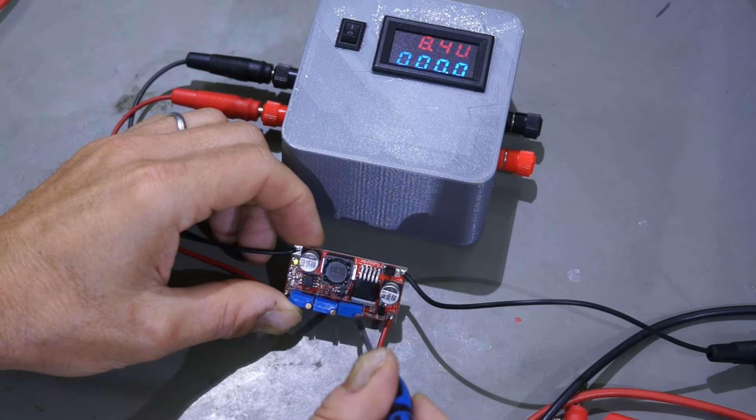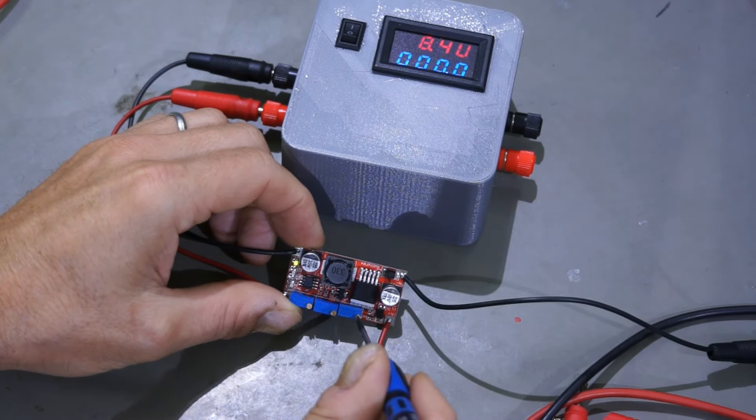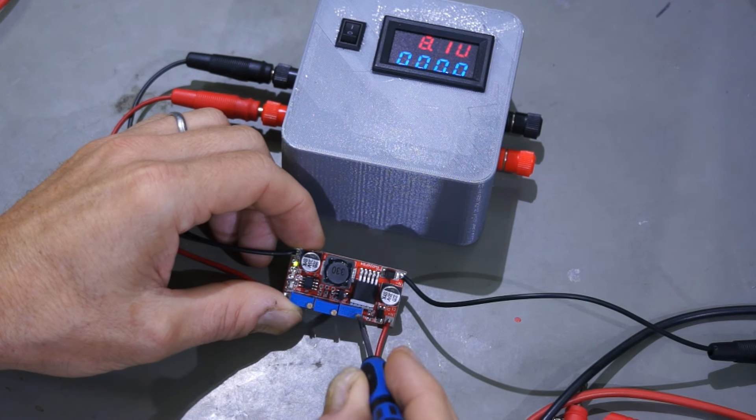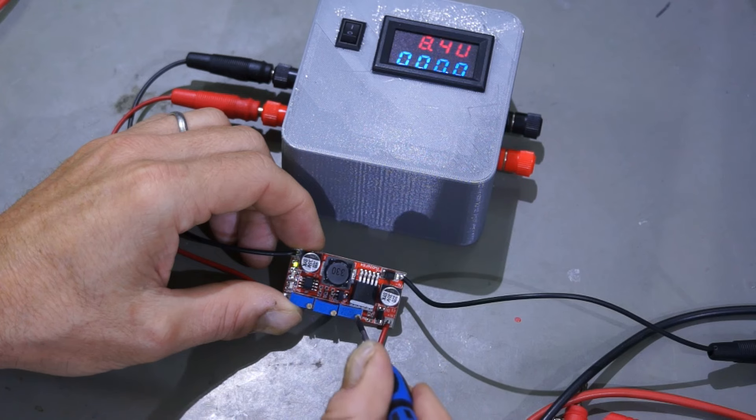But first, what is the purpose of a buck converter? A buck converter produces a stable voltage which is always lower than the input voltage.